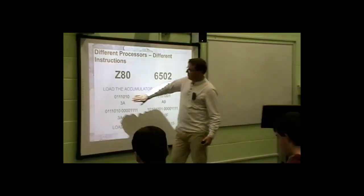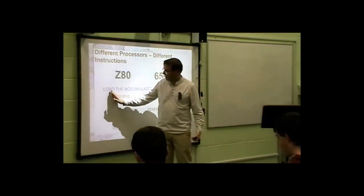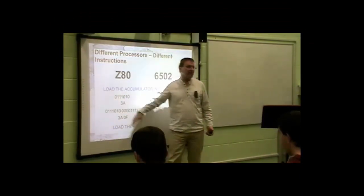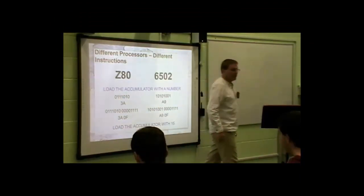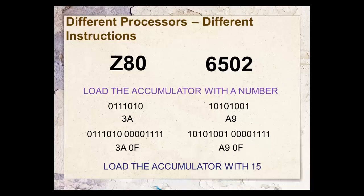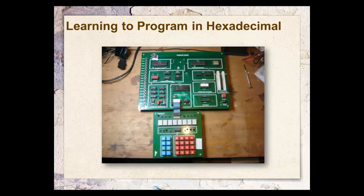There's the full instruction: load the accumulator with this number. The number is exactly the same in both cases — 3A 0F or A9 0F, both loading the accumulator with 15. Both doing the same operation yet with a different set of instructions. Not forgetting that your computer is still talking binary, we're learning hexadecimal. And in the first few days of doing so, this is how you as a student would have been asked to learn how to program a computer.